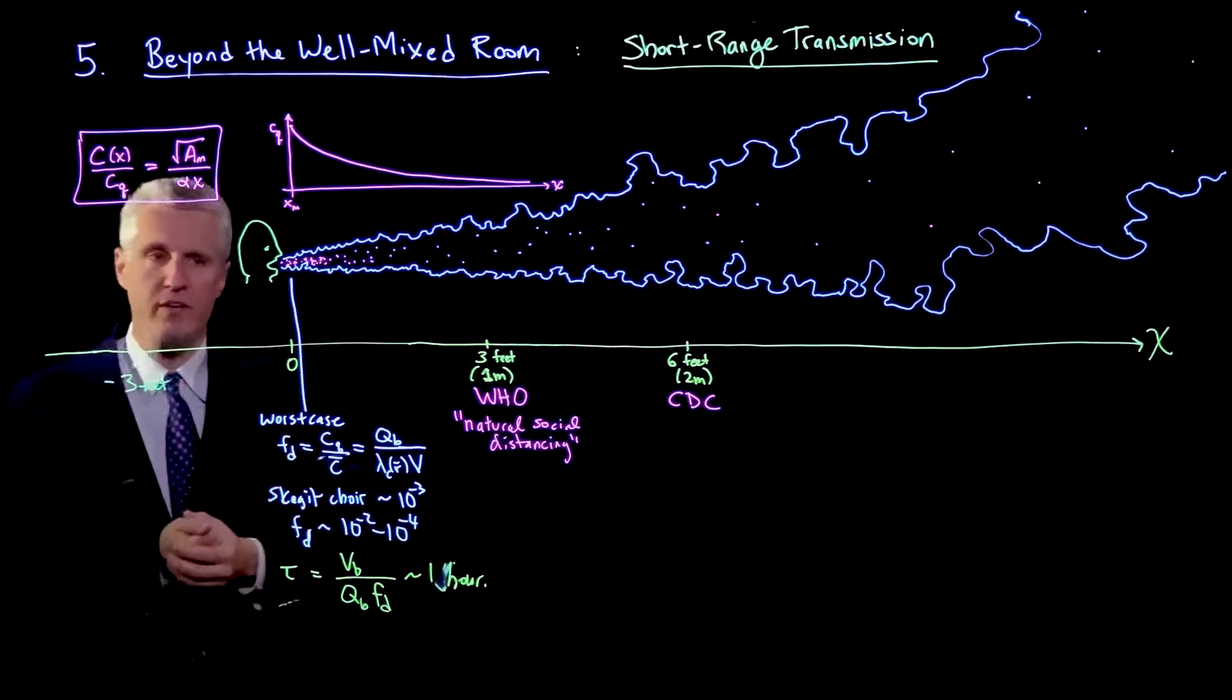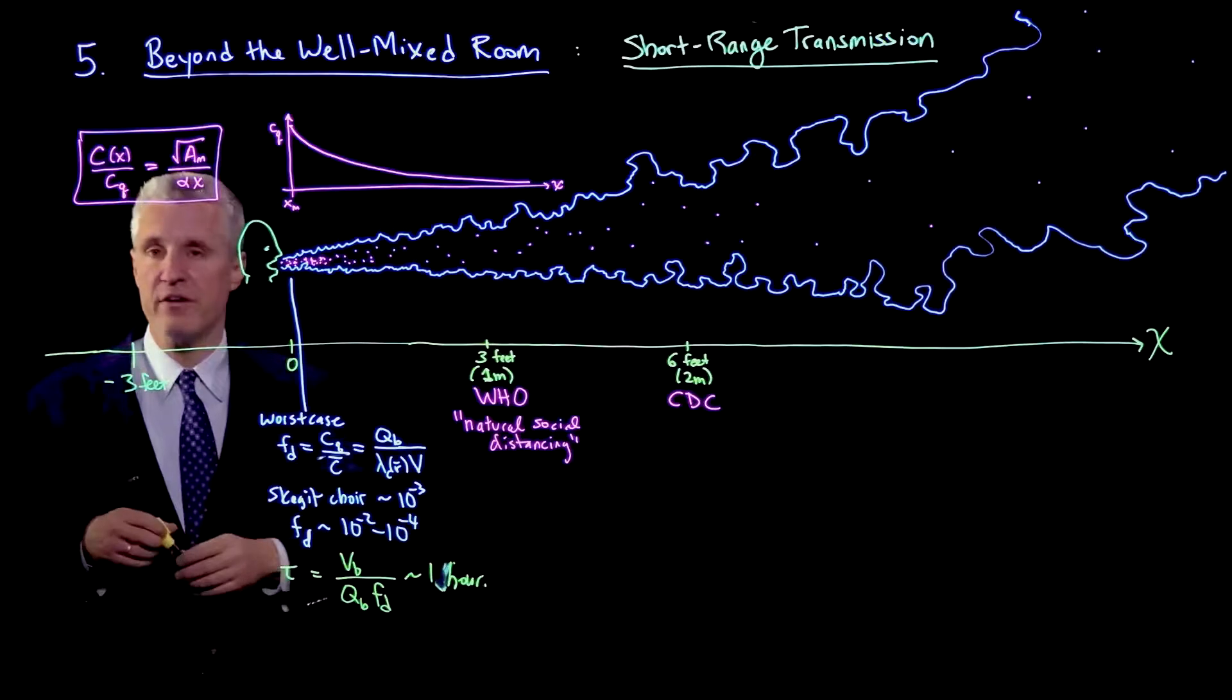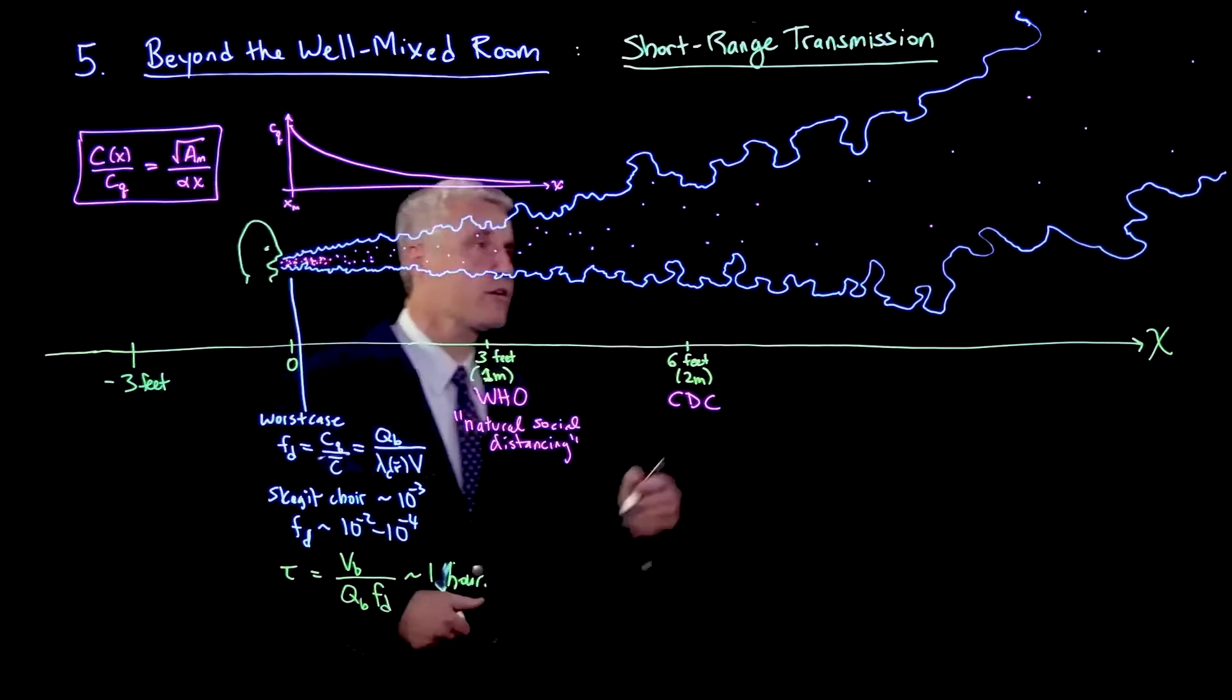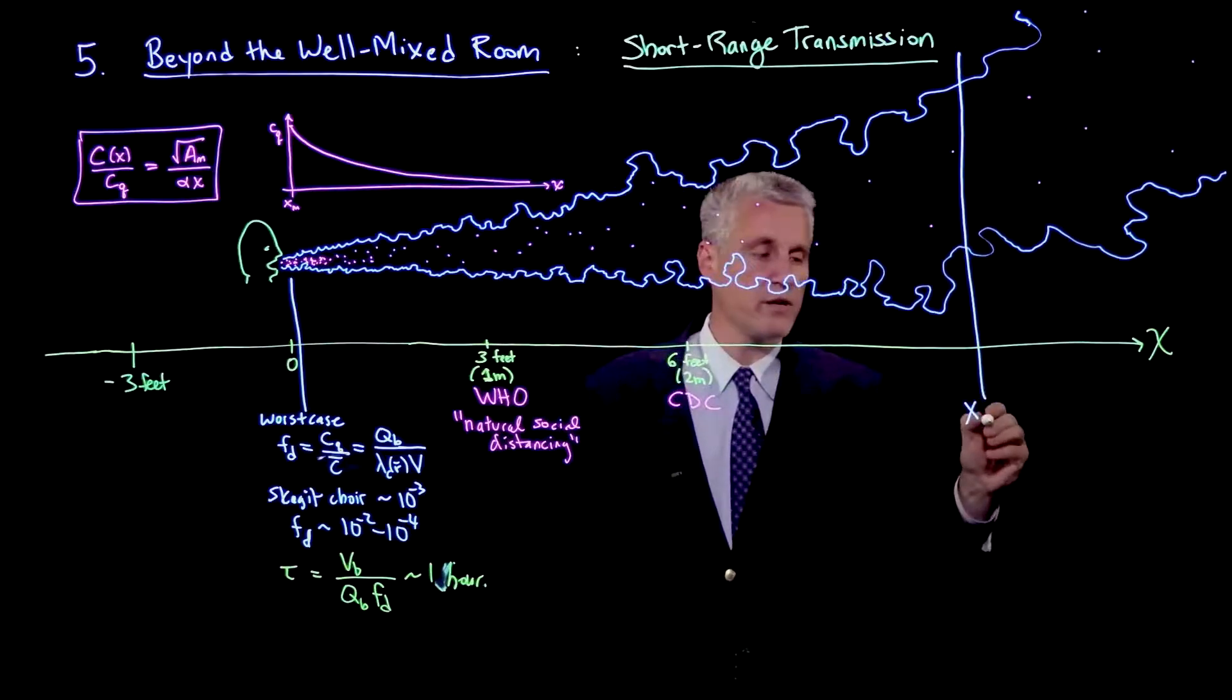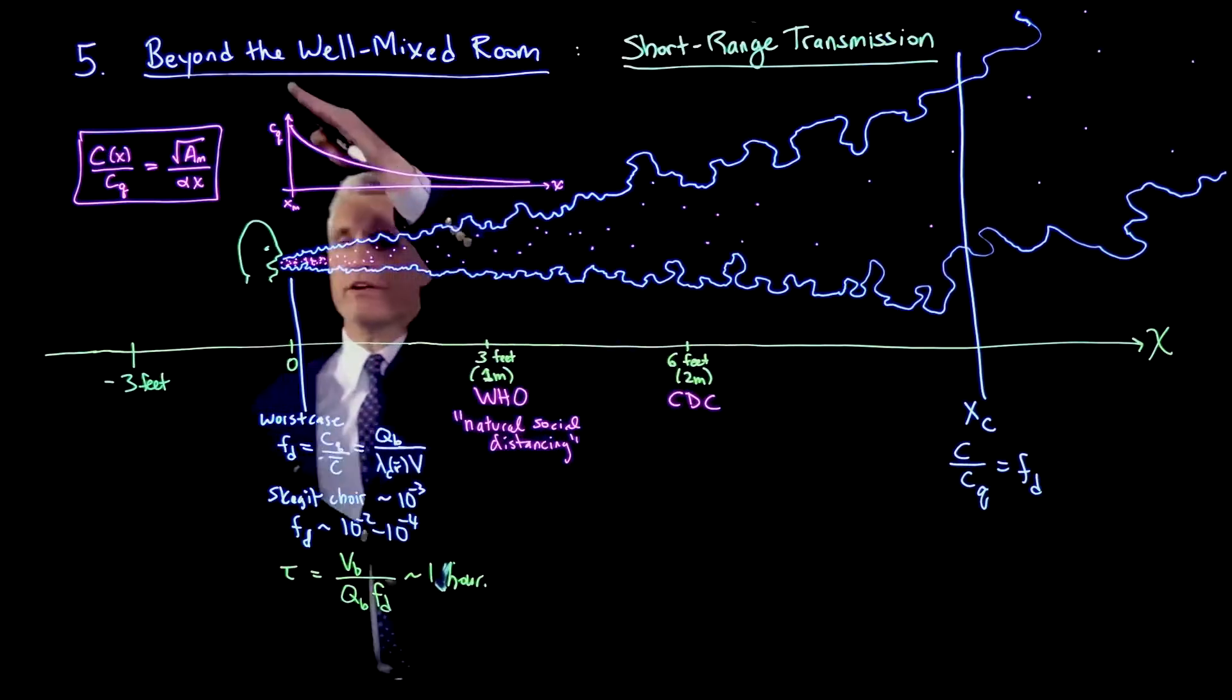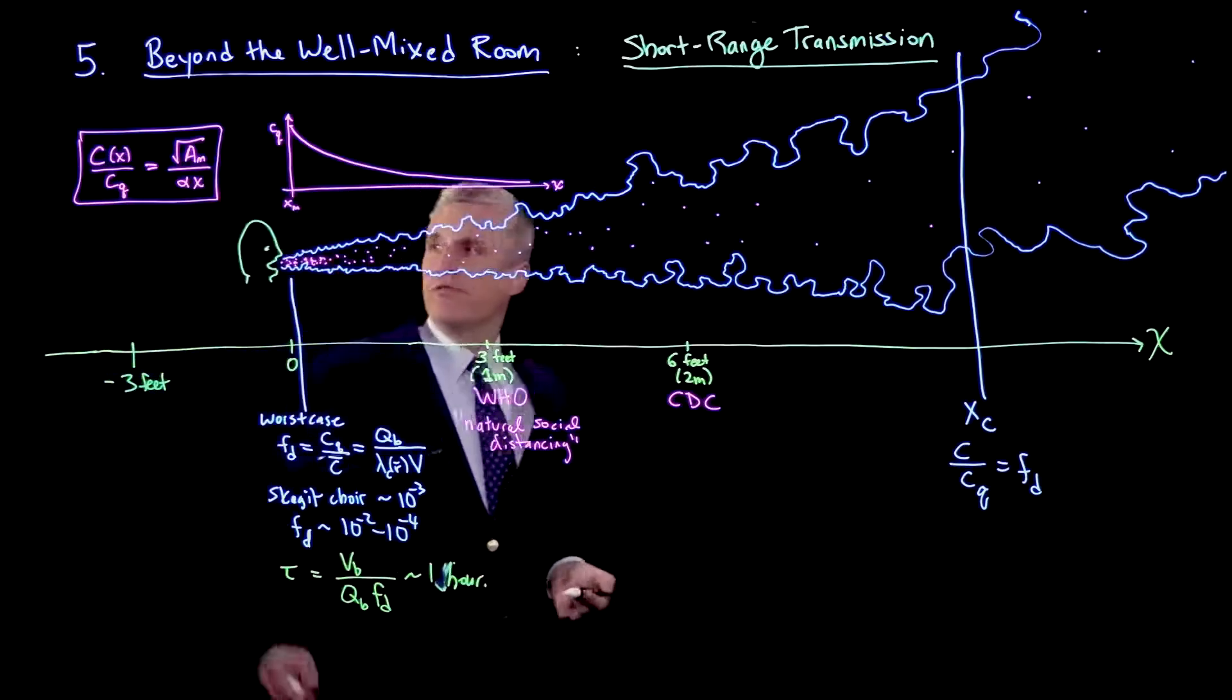This brings me to how we should think about short-range versus long-range transmission: compare the concentration of the respiratory jet to that of the well-mixed ambient. That's the definition of when there's a transition from short-range to long-range behavior. There's a certain position xc where C over the initial value equals the dilution factor Fd. This is the point where the orange curve hits the concentration predicted for the background well-mixed room.